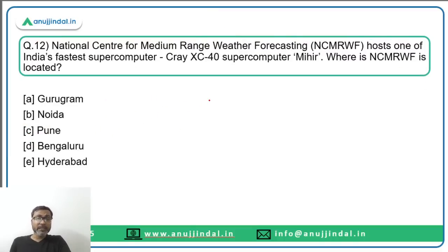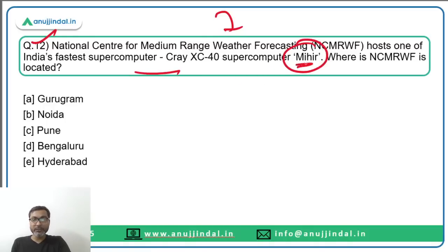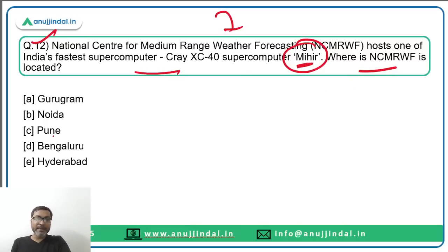Question twelve: The National Centre for Medium Range Weather Forecasting hosts one of India's fastest computers — the Cray XC40 supercomputer, which has the Indian name Mihir. This forecasting center is located in Noida. Option B is the correct answer.